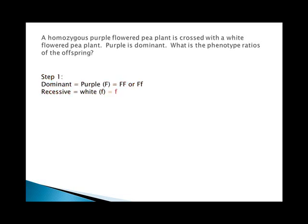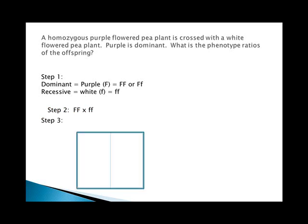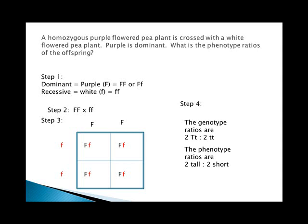Step one: dominant is purple, recessive is white, and we've assigned F as the letter. Step two: homozygous purple is big F big F times little f little f. Step three: set up the Punnett square — split, bring column headings down, bring row headings across. Step four: the genotype ratios are all big F little f, and the phenotype ratios are all purple.